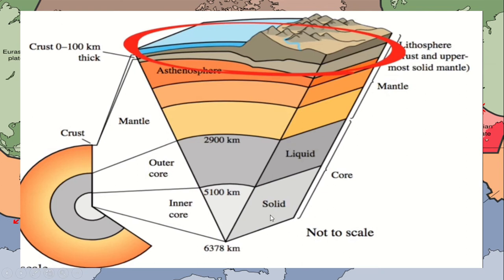Why is the inner core solid? Because of extreme heat, it has solidified. It's somewhat like when you buy banana Q — the sugar melts when heated, but because of the extreme heat it solidifies again. That's somewhat like what happens in the inner core.